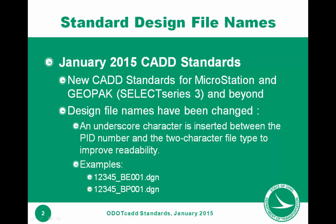Here are a couple of examples. Using a PID number of 12345, then an underscore, then the two-character code for a base map existing — that's the first file of that type. The second example is a base map proposed.